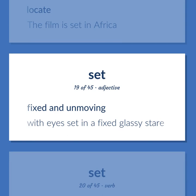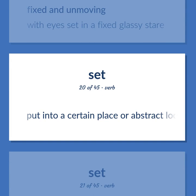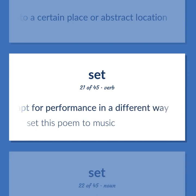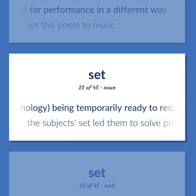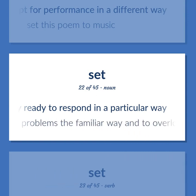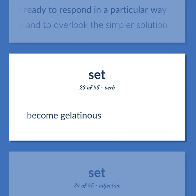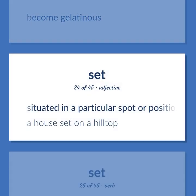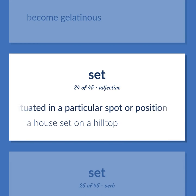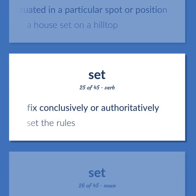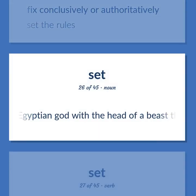Fixed and unmoving. With eyes set in a fixed glassy stare. Put into a certain place or abstract location. Adapt for performance in a different way. Set this poem to music. Psychology: being temporarily ready to respond in a particular way. The subject set led them to solve problems the familiar way and to overlook the simpler solution. Become gelatinous. Situated in a particular spot or position. A house set on a hilltop. Fix conclusively or authoritatively. Set the rules. Evil Egyptian god with the head of a beast that has high square ears and a long snout — brother and murderer of Osiris.